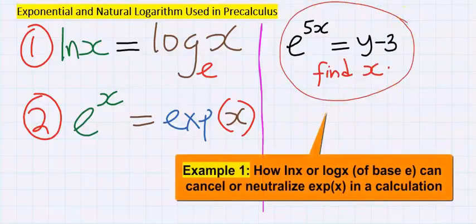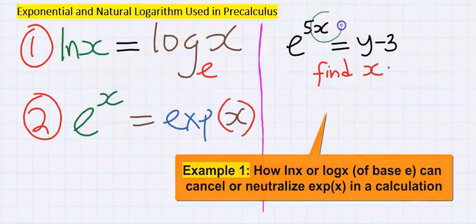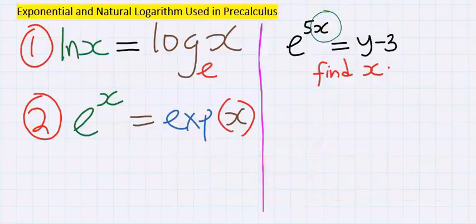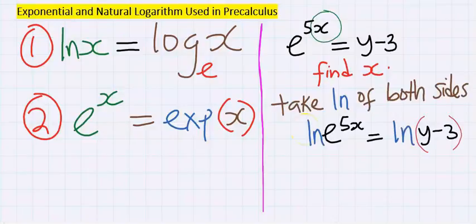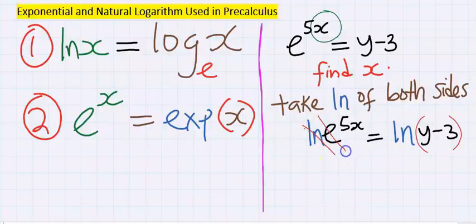However, x is in a difficult position. To get x out of this problem, we are going to need the help of a natural log, and we are going to take the natural log on both sides. Exponential dislikes the presence of natural log, hence natural log will cancel it out.